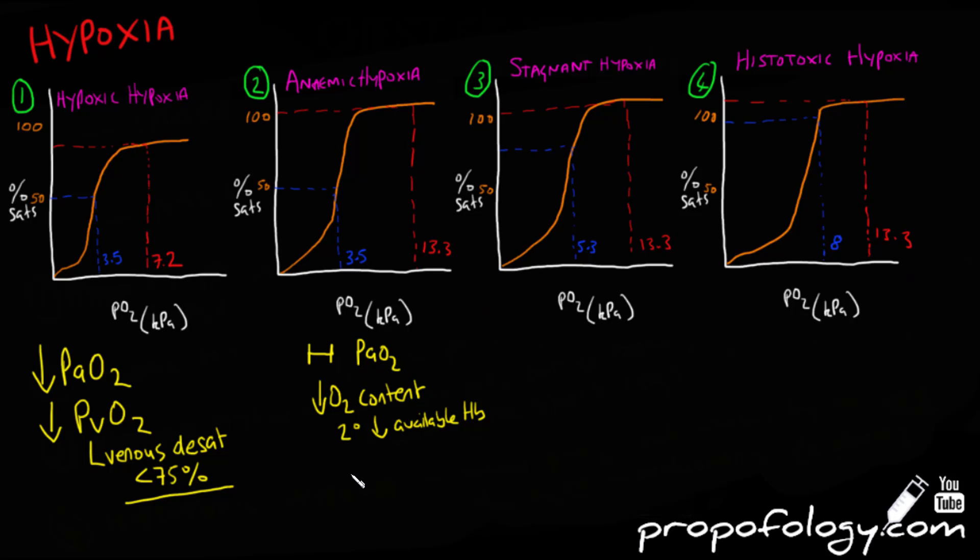The result is increased oxygen extraction and venous desaturation. So you'll see that the PaO2 is normal, 13.3, but you'll see that the venous saturation is lower because there's a higher oxygen extraction.